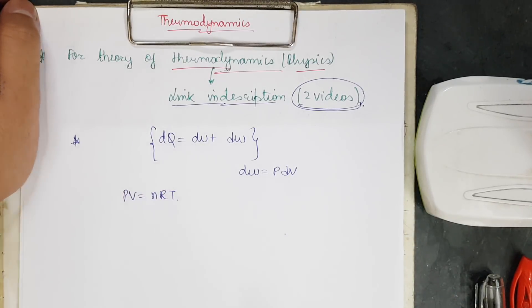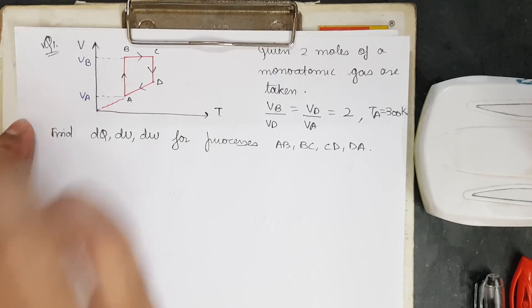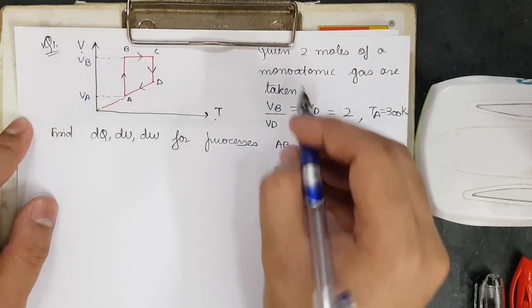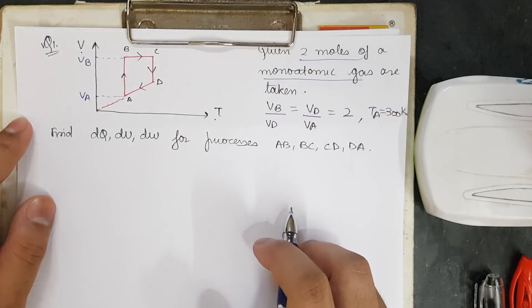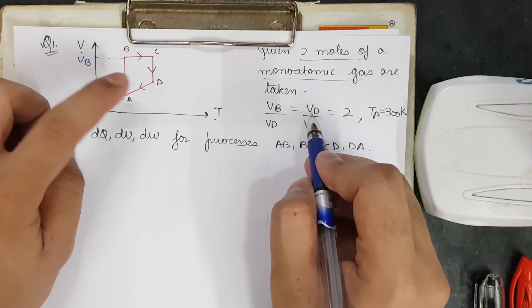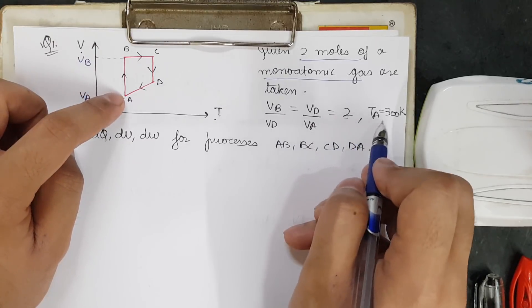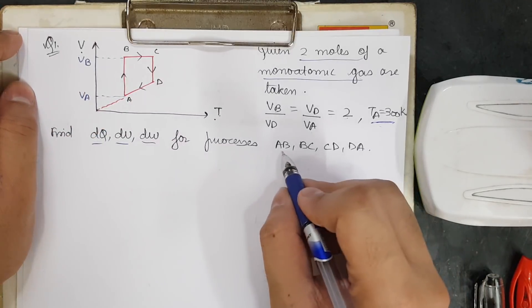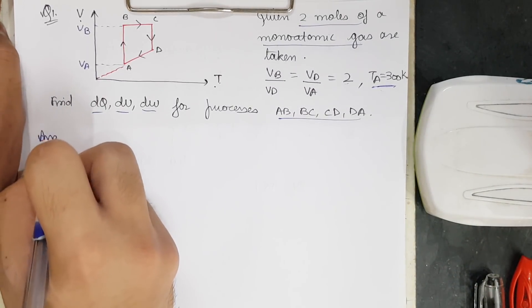Let us begin with the first question for the chapter. Many people were asking for a question involving graphs, so my first question is related to graphs only. We have been given a V versus T graph where two moles of a monoatomic gas are taken. The ratio of volume VD to VA is equal to 2, and the temperature at point A is given as 300 Kelvin. We need to find dQ, dU, and dW for the four processes.